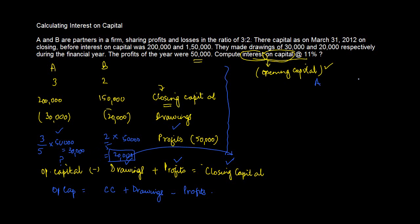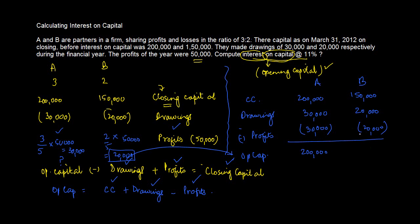So A, B, closing capital given 200,000, 150,000 plus drawings this is 30,000 and 20,000 minus profits 30,000, 20,000. This will give us opening capital. Interestingly the opening and the closing capital now comes same because the drawings are equal to profit.